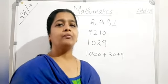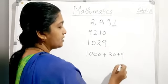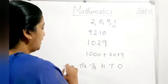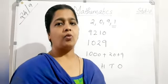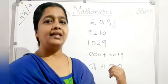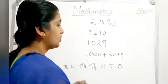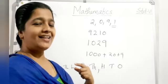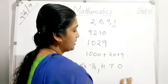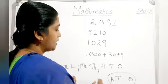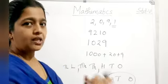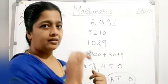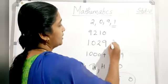Indian and international systems of numeration. In the Indian system, the place values go: ones, tens, hundreds, thousands, ten thousands, lakhs, ten lakhs, crores, ten crores — grouping as 3 then 2-2-2. In the international system, grouping is in sets of 3 from right: ones, tens, hundreds; then thousands, ten thousands, hundred thousands; then millions. Write commas after every 3 digits from right.